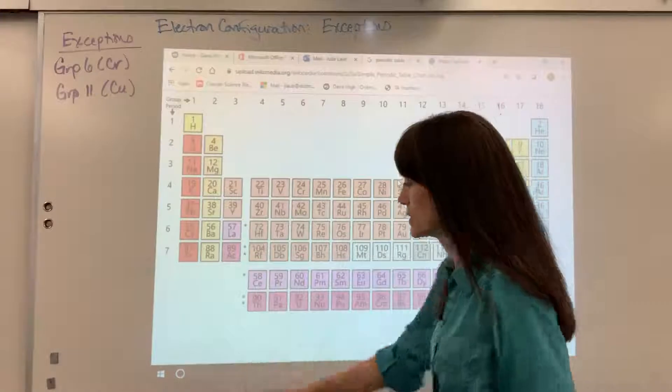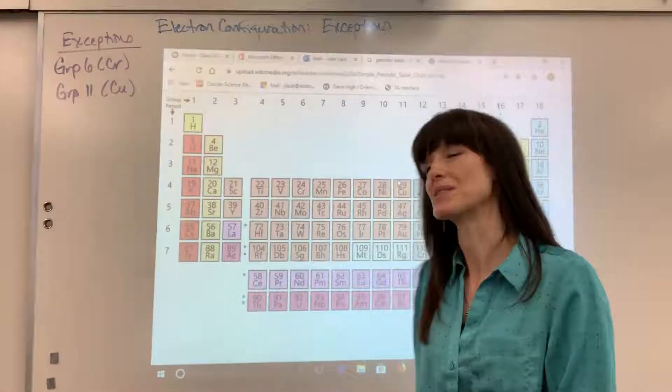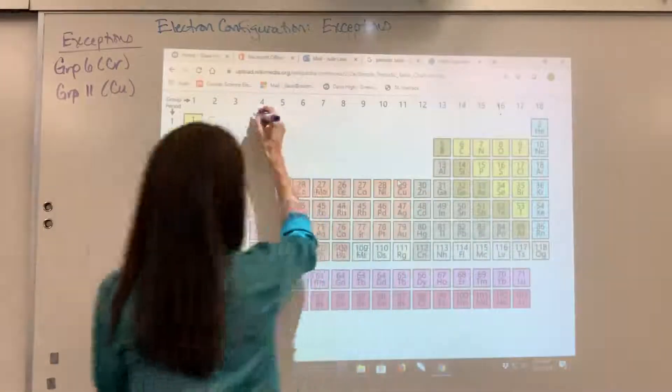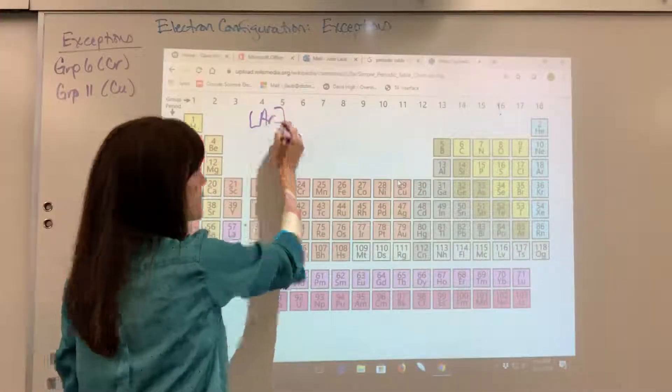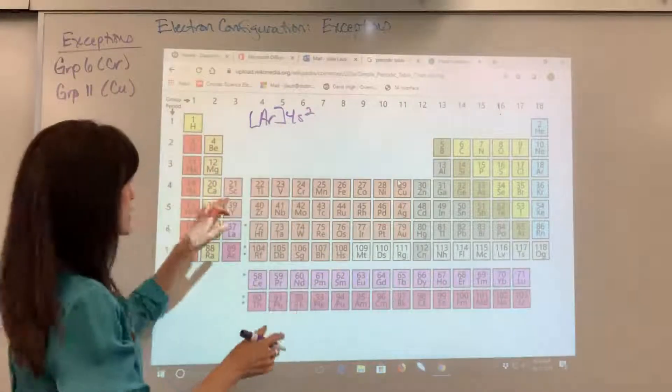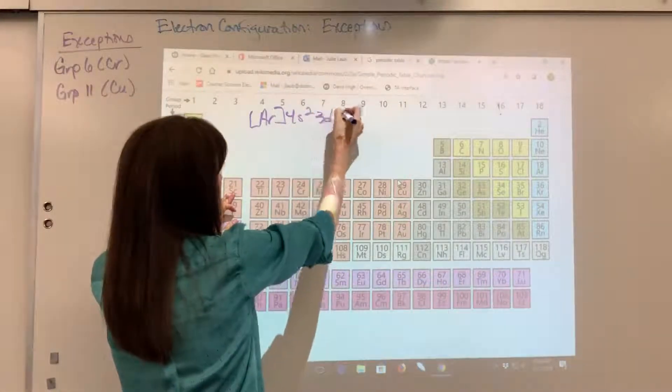Okay, let's look at the other exception. And I bet you can see already where this is going. It's copper. So if we would write the core notation for copper, you've got argon, last noble gas, 4S2 for the rest of the electron configuration, 3D9.